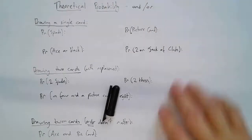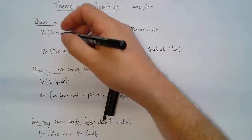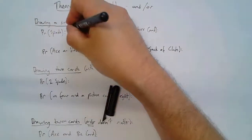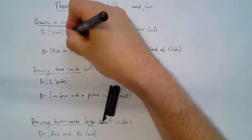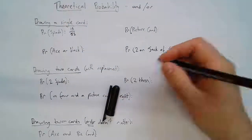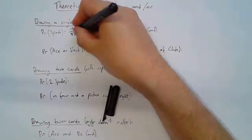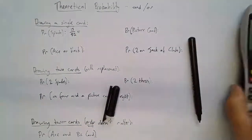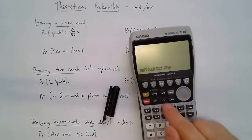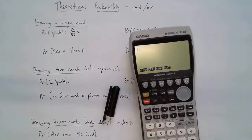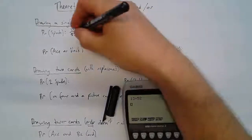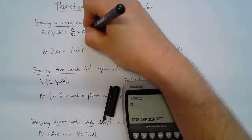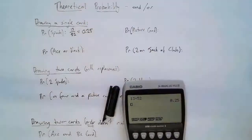There are 13 spades, so we're going to have 13 out of 52. On our calculator, 13 out of 52 is 0.25. So the probability of it being a spade is 0.25.